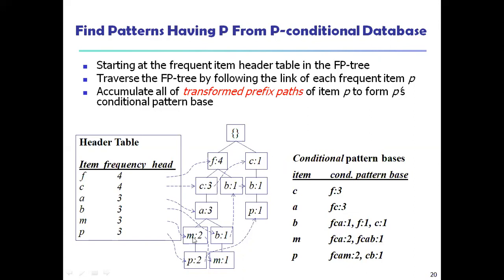For B, the value 2 exists along with F, C, A — the path F, C, A, B exists one time here and one time here. Tracing the path: F, C, A, B — one time. Then the path F, C, A, M with count 2. And one more B value: C, B with count 1. This is how to determine the conditional pattern base — how long each item has been combined with other items.